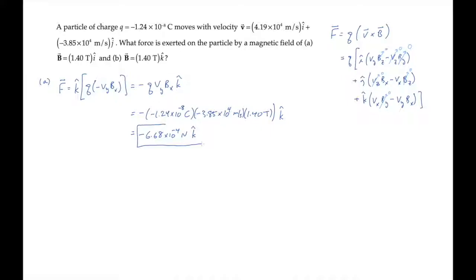In part B the velocity stays the same but the magnetic field changes from the x direction to the z direction. So let me restart on the magnetic field components over here. And now zero out the x components and the y components.